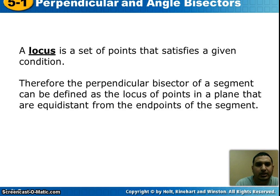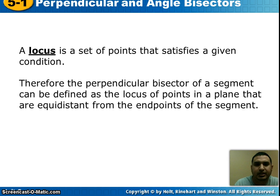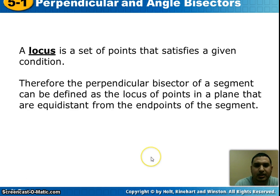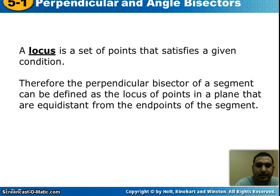The next vocabulary word is locus — that's a set of points that satisfies a given condition. So we can define perpendicular bisector as the locus of points, or the collection of points in a plane, that are equidistant from the endpoints of the segment.